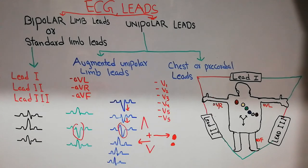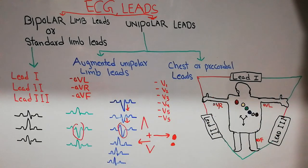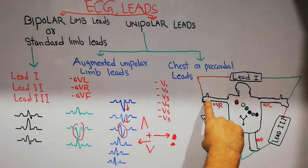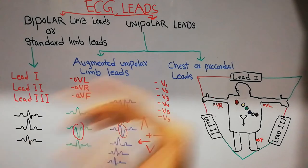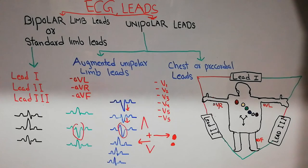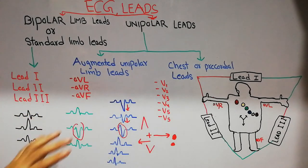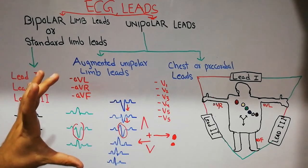The augmented leads — AVL, AVR, and AVF — are similar to the bipolar leads, but in these leads only one electrode is active while the other two limb leads behave as neutral or negative electrodes. If the right arm is the active electrode, it is known as AVR. If the left arm is active, it is known as AVL. If the left foot is active, it is known as AVF. These are called augmented leads because the ECG machine augments or increases the voltage of these leads.